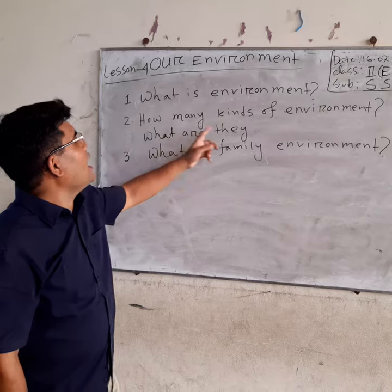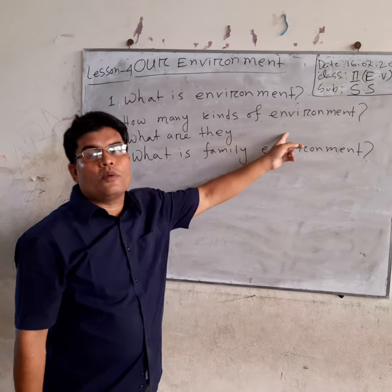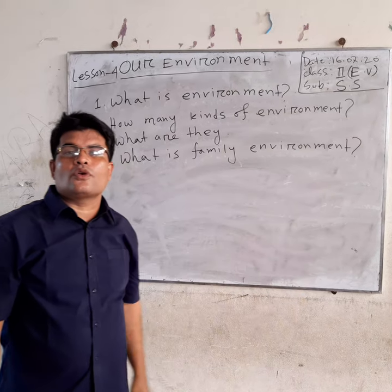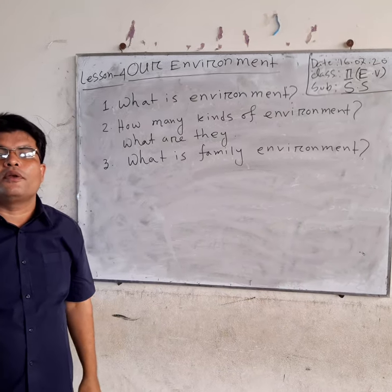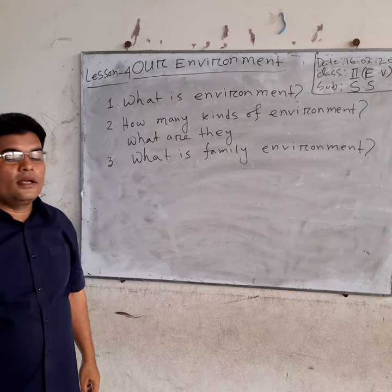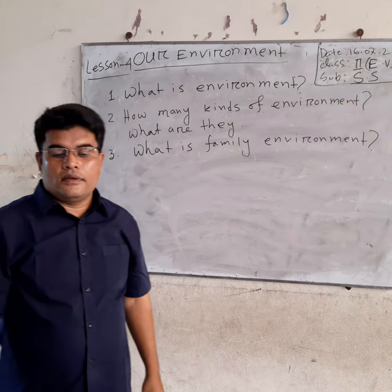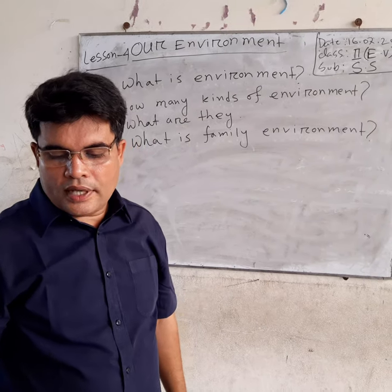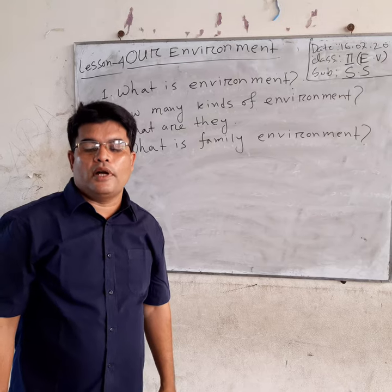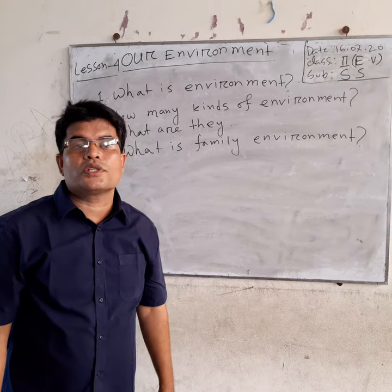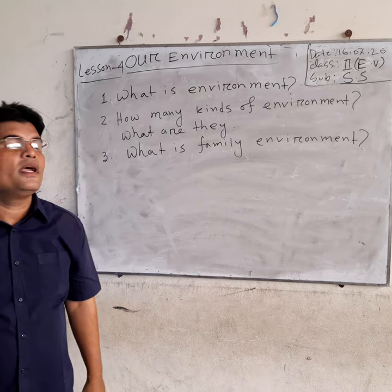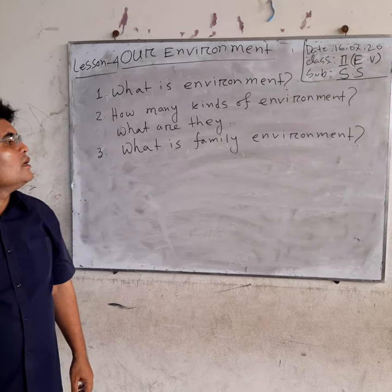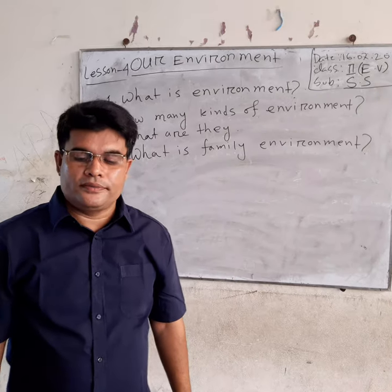Number 2: How many kinds of environment? Three kinds of environment. They are: number 1, family environment; number 2, social environment; and number 3, natural environment.